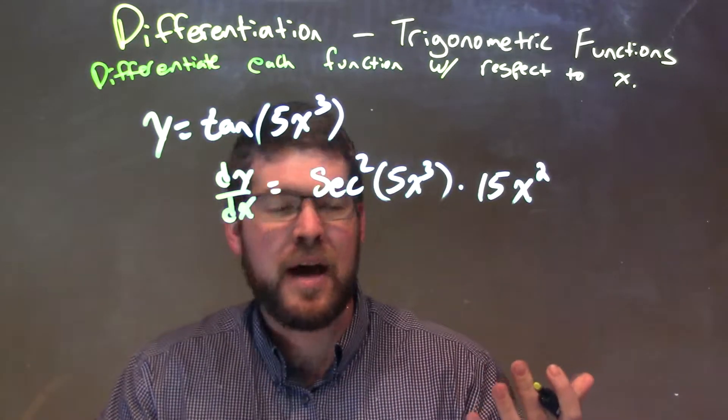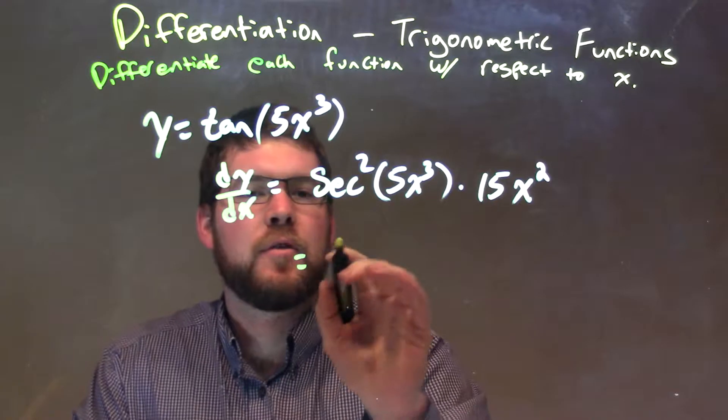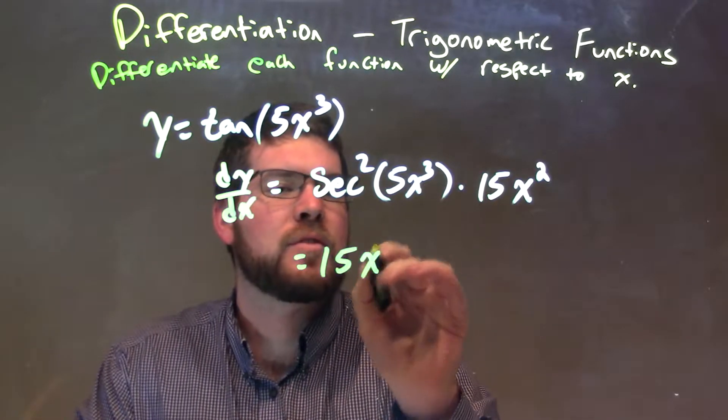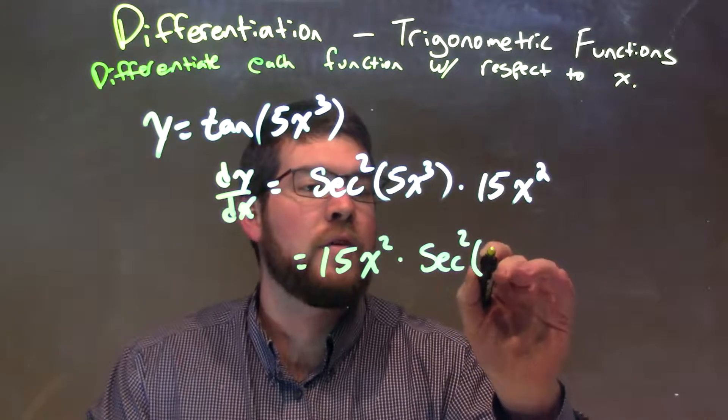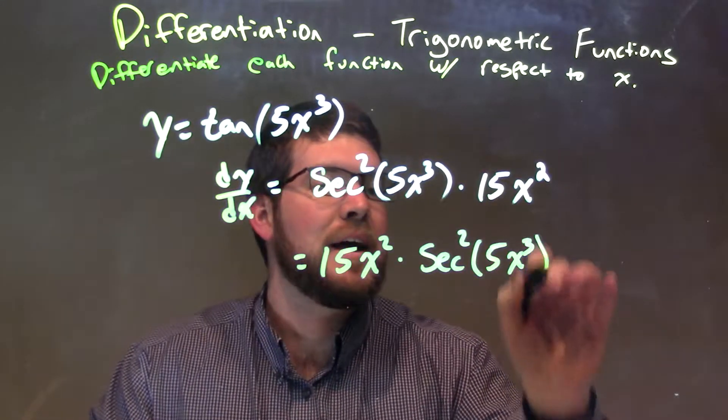So now we just rearrange that with 15x squared out front, if we so desire. 15x squared out front times secant squared of 5x to the third, and there we have it.